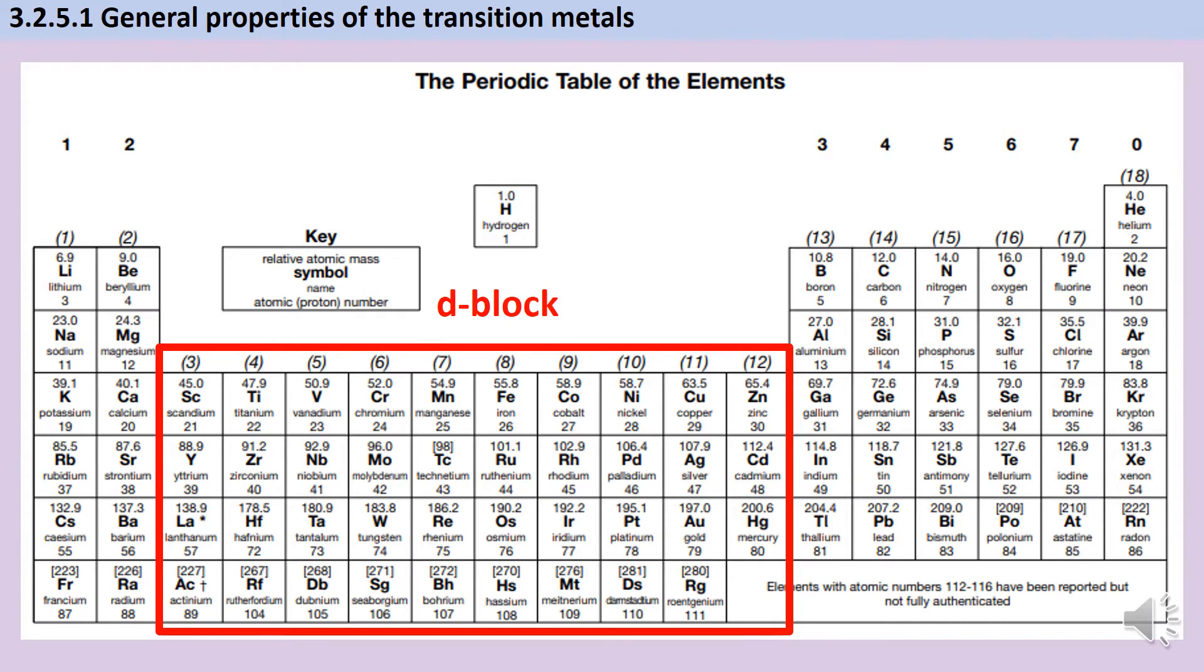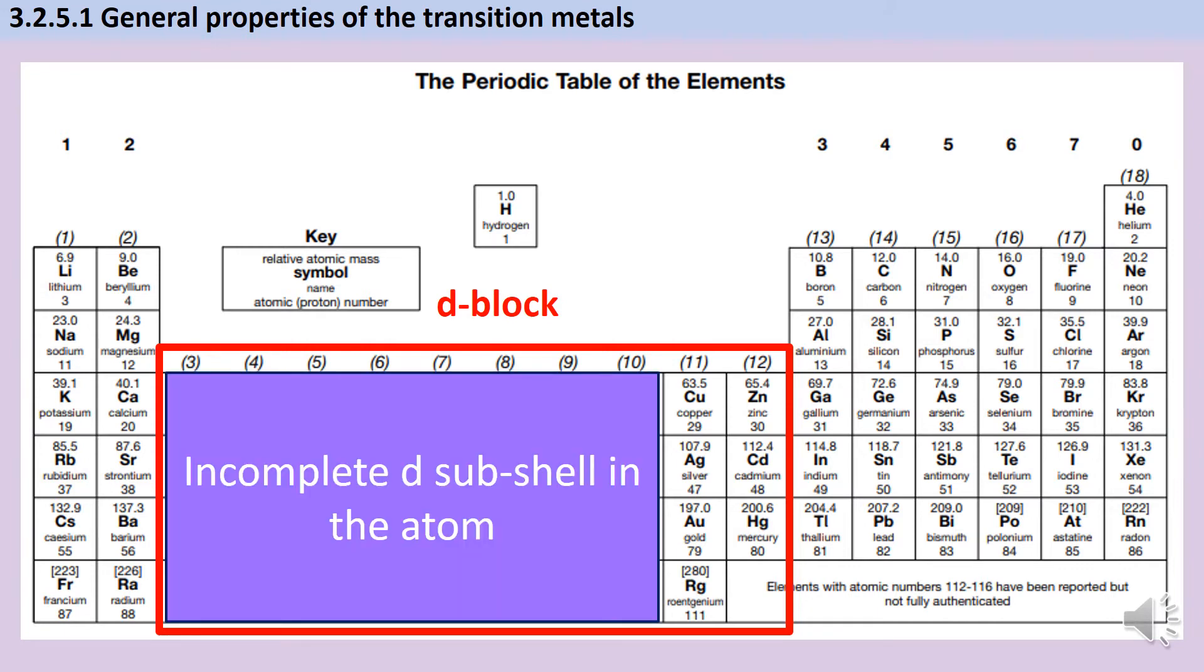As we go across the period, Scandium has one electron in the 3d subshell, Titanium has two, Vanadium has three, Chromium has five, and then we carry on with five in Manganese, six in Iron, seven in Cobalt, eight in Nickel. So the first eight elements in every period have an incomplete d subshell in their atom.